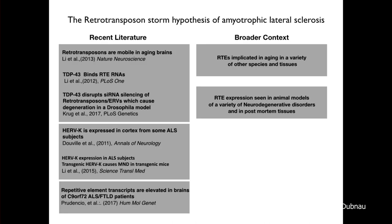There have been a series of papers from different groups that contributed to our thinking. My lab published in 2013 a finding that some retrotransposons become increasingly expressed and potentially actively mobile in neurons in fruit flies as they age. This fell within a context of simultaneous literature from various groups finding that retrotransposon expression and perhaps even replication may be a hallmark of aging across a variety of tissues and species.